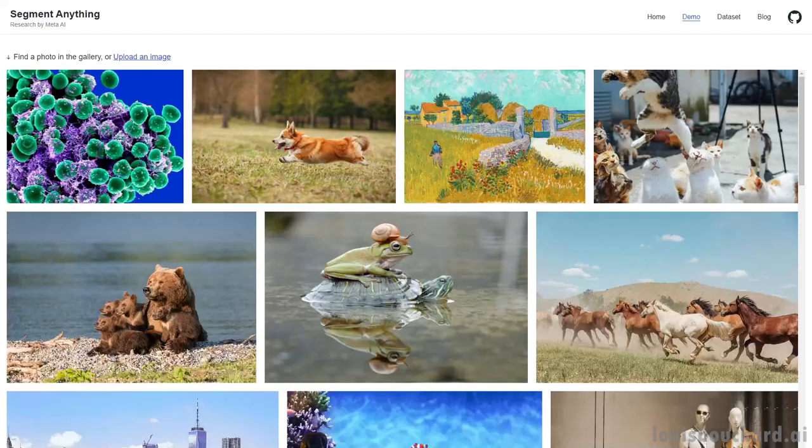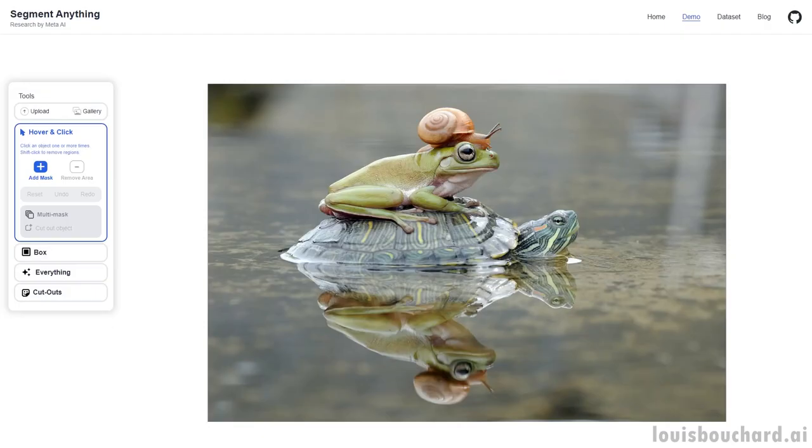To answer the second question of why it's that good, we must go back to the root of all current AI systems: data. It's that good because they trained it with a new dataset which the authors cite as the largest ever segmentation dataset.